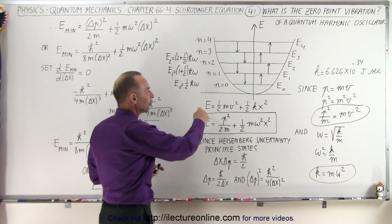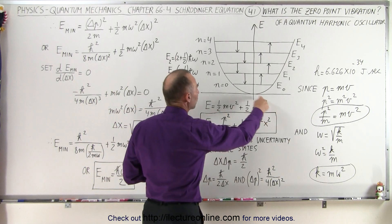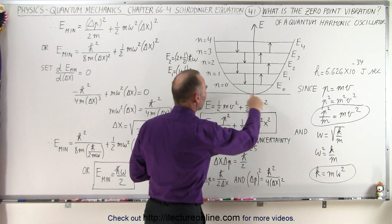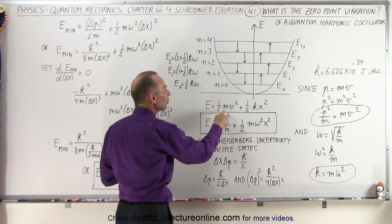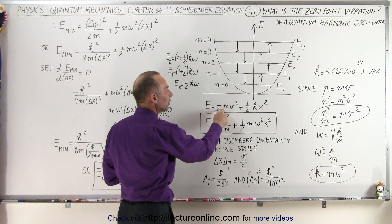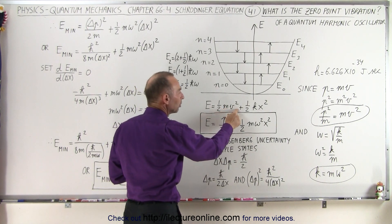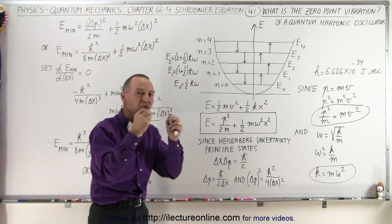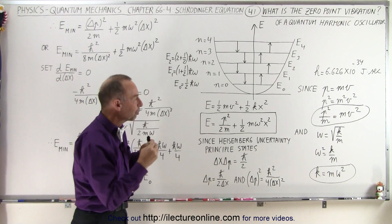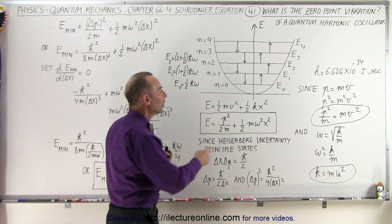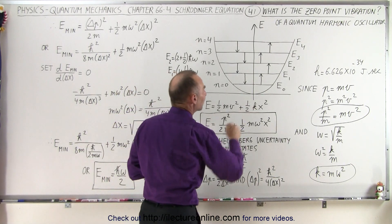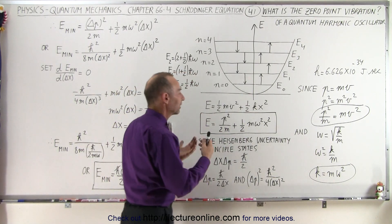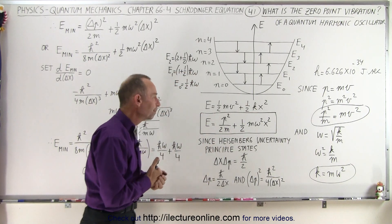Let's go back to the general equation of an oscillator. The energy is equal to the energy contained within the motion — the kinetic energy — plus the energy contained within the spring, or the spring constant, which is one-half kx squared, the potential energy.